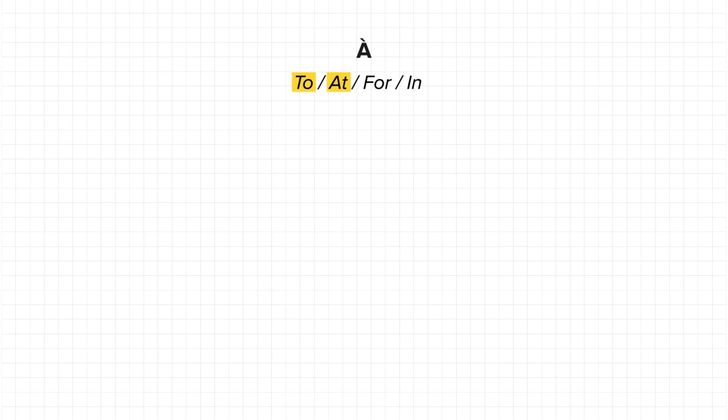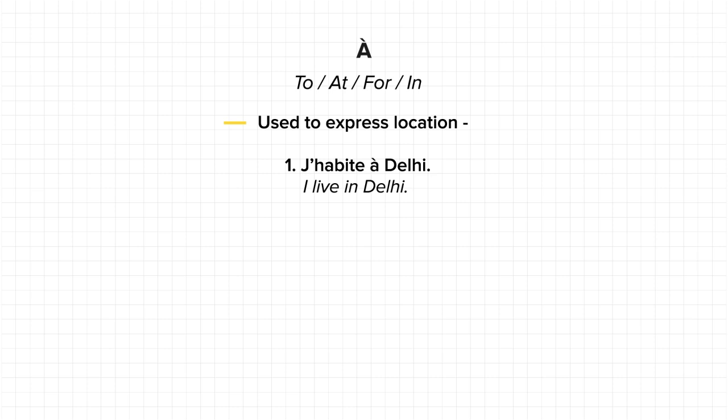Let's move on to 'à', which means 'to', 'at', 'for', or 'in'. 'À' is used to express location — like where you are going, where you are at the moment, and much more. It can be used to simply say 'I live in Delhi': 'J'habite à Delhi'. Then I can say 'Je vais à Paris' to say 'I am going to Paris' or 'I go to Paris'.